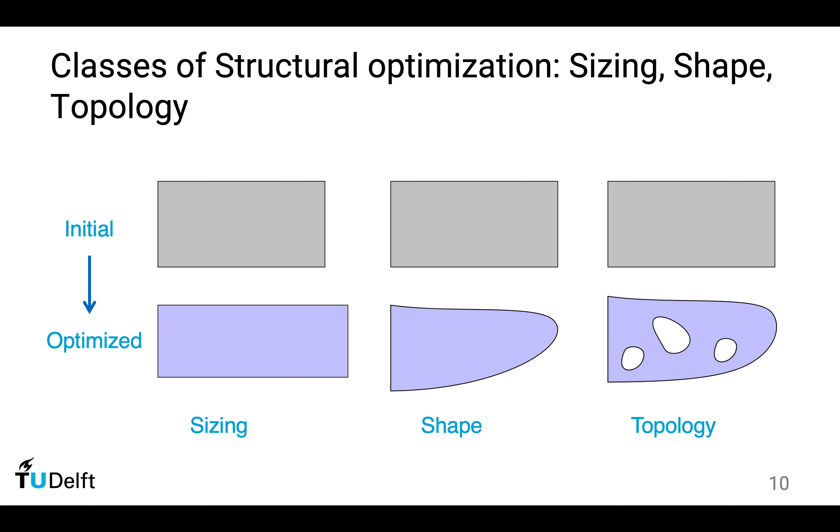Topology optimization is different from sizing and shape optimization. Mostly, I expect that the topology is modified. So on the right-hand side, with topology optimization, after optimization you get three holes in the geometry. The topology in 2D basically considers how many holes you have in a domain. In this case, the topology is changed, and to differentiate from sizing and shape optimization, we call it topology optimization.